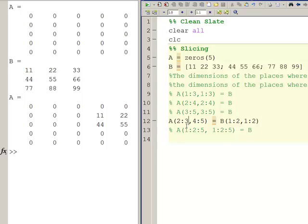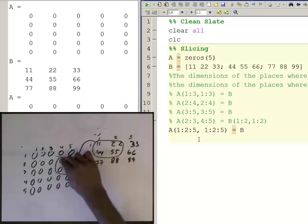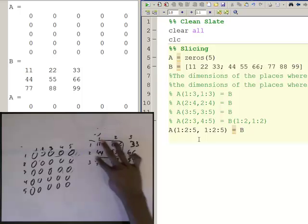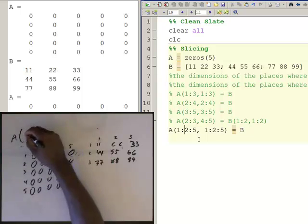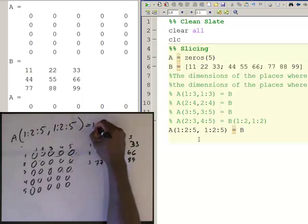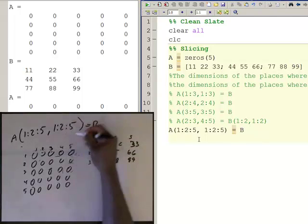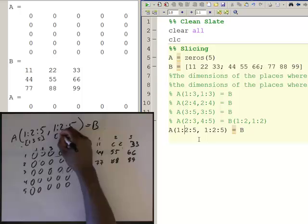Okay, now they don't have to be contiguous. You can get something like this, and this one's a little funky, so let me erase this and sort of clean up my board here so we can understand it. So now what we're doing is we're doing, let's say we're doing A 1 colon 2 colon 5 comma 1 colon 2 colon 5 equals B, just all of B. So this must be a three by three.